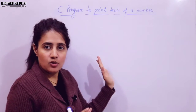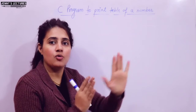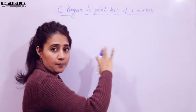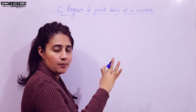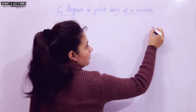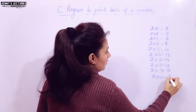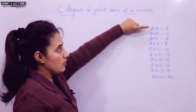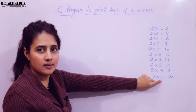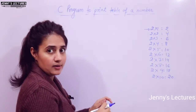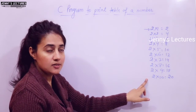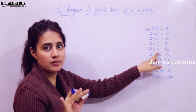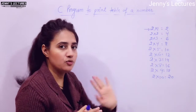Let's discuss a program to print the table of a number. First, think about the output you want, then write the program. I want to ask the user to enter a number — suppose they enter 2 — and print the multiplication table of 2. Here, 2 into 1, 2 into 2, up to 2 into 10. The number 2 is the same at all 10 places; one number is increasing from 1 to 10.